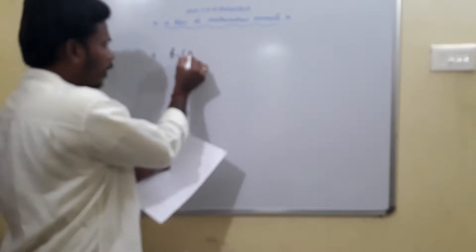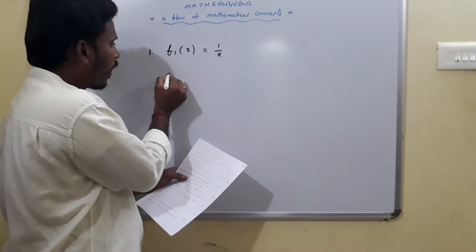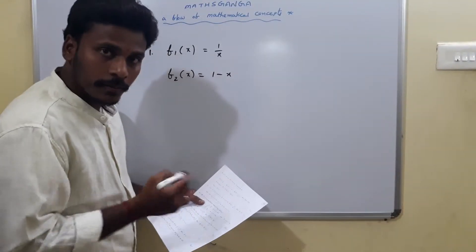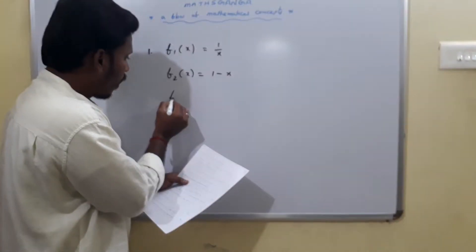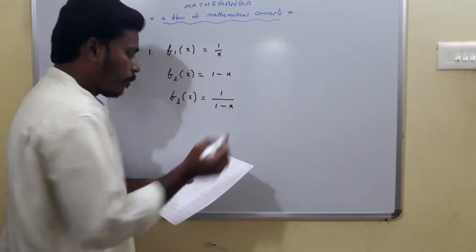The question is given like this. Three functions are given: F1 of x as 1 by x, and another function F2 of x is given as 1 minus x, and the third function F3 of x is 1 by 1 minus x.